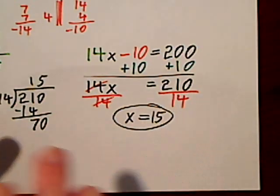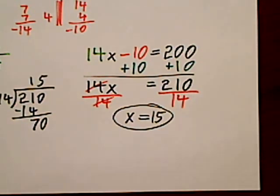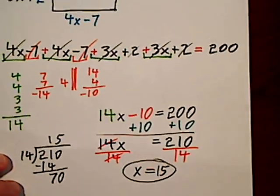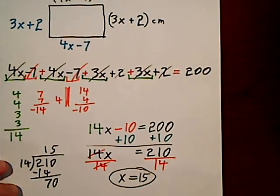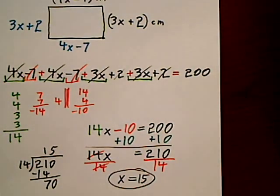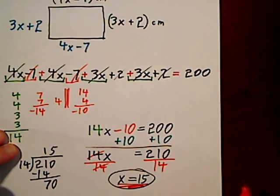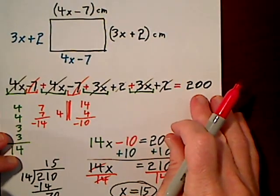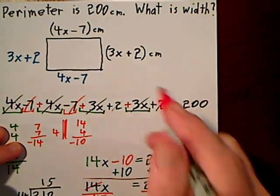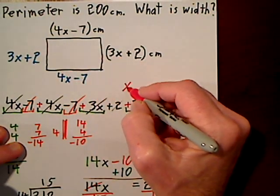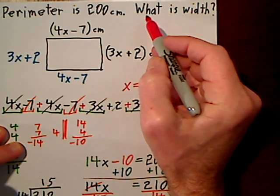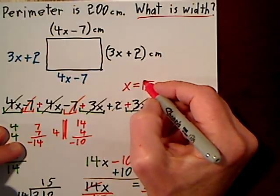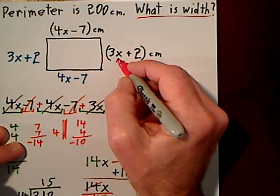So we figured out what x is, but we're not finished. So x is 15, but they want the width. We figured out that x equals 15. They want the width. So we take this 15 and we plug it in right there.